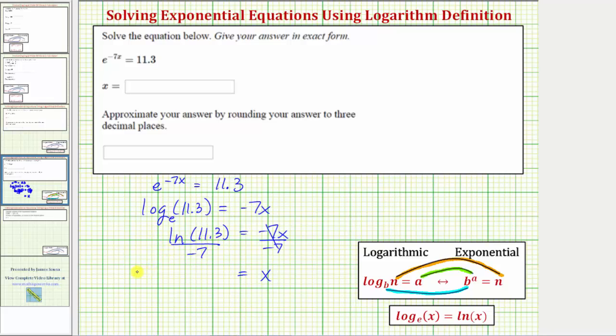Or we could also write this as negative one-seventh natural log 11.3. Divided by negative seven is the same as multiplying by negative one-seventh. So our exact solution is x equals negative one-seventh natural log 11.3. So this is what we enter in our first answer cell.